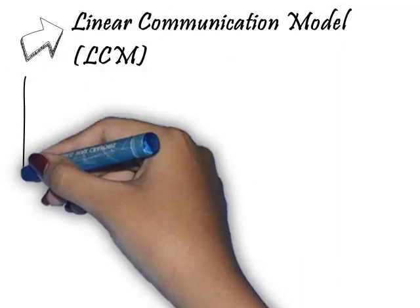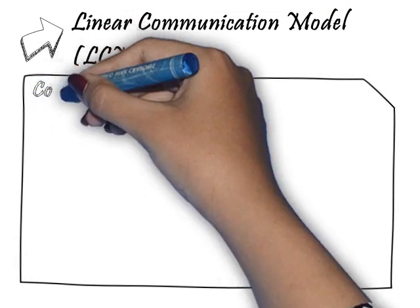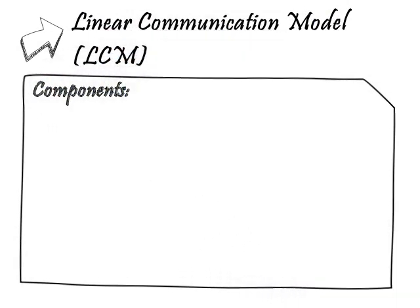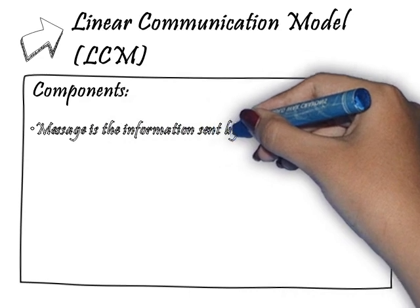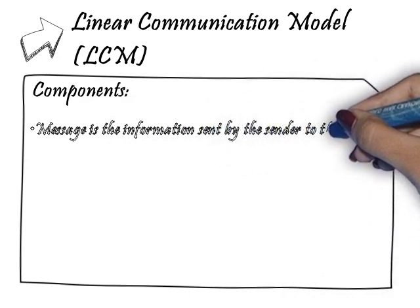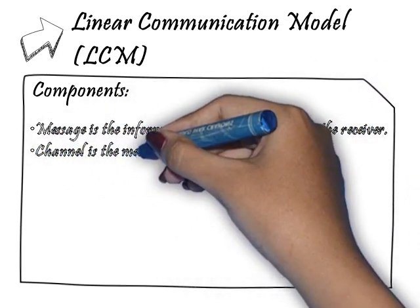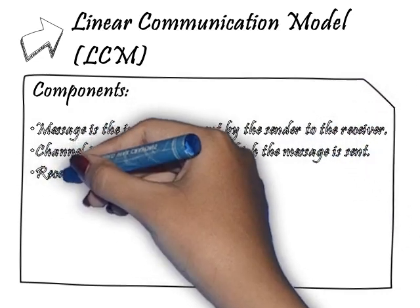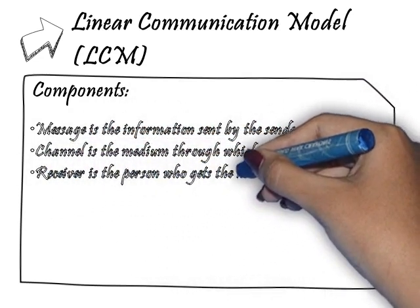Let's look into the different aspects of each model of communication. For the components, we will still see some significant elements such as the message, the channel, the receiver, and the presence of noise in each model of communication.